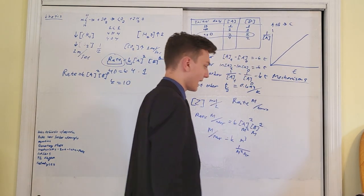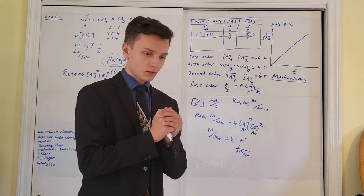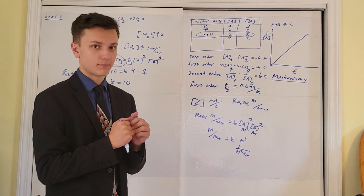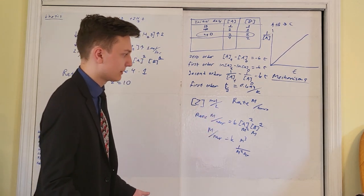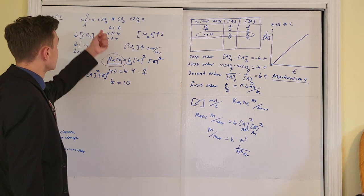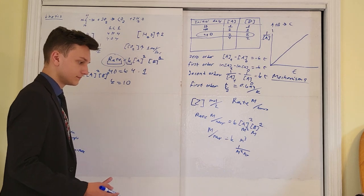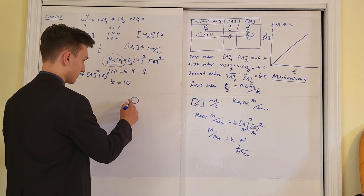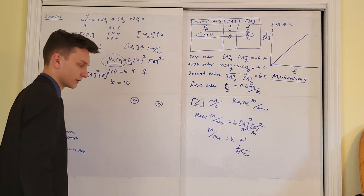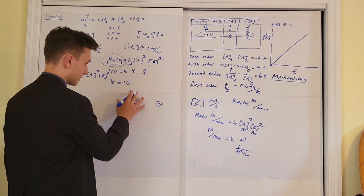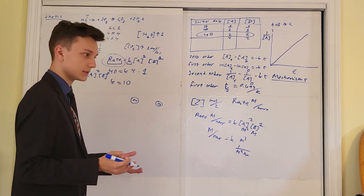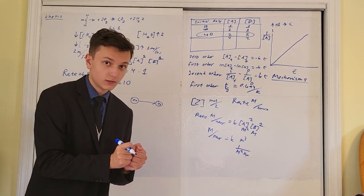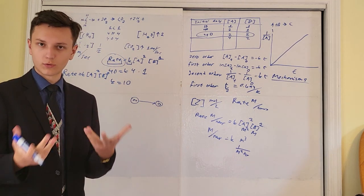Now let's build up a second topic: reaction mechanisms. Most chemical reactions do not happen in a single step — they happen in a series of collisions. For a reaction to take place, you have a vessel with particles floating around, and when they collide, there is a possibility for a reaction to happen.